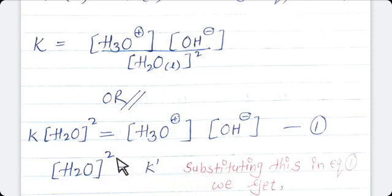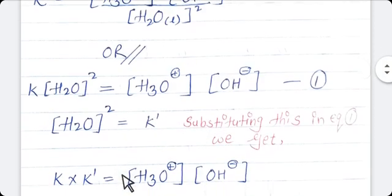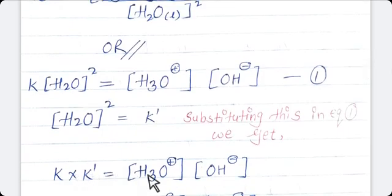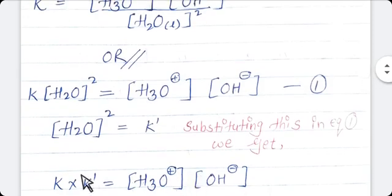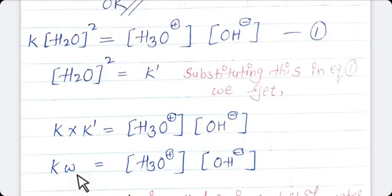Substituting this value into equation 1, we get K into K dash equals concentration of H₃O⁺ times concentration of OH⁻. This K into K dash we call the ionic product of water, denoted by KW. So KW is nothing but the ionic product of water — the product of molar concentration of H₃O⁺ (hydrogen ion) and hydroxyl ion at equilibrium in pure water at a given temperature.